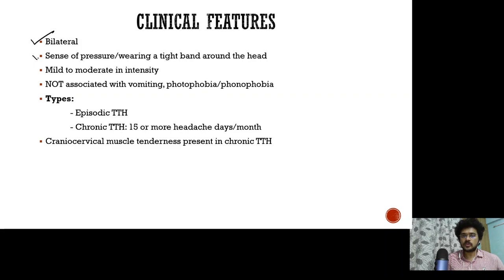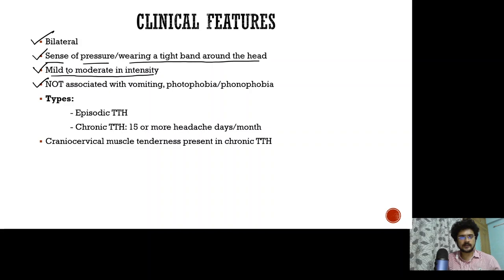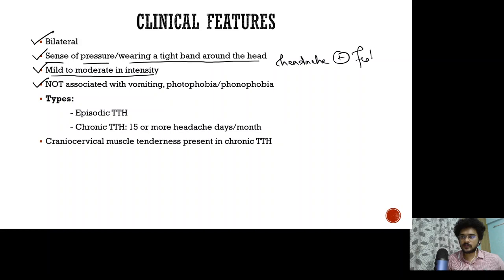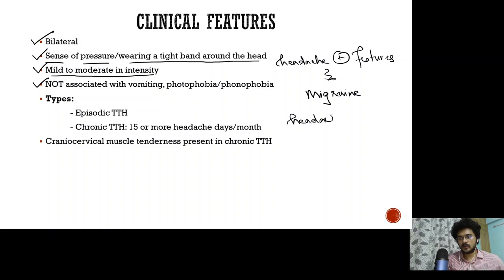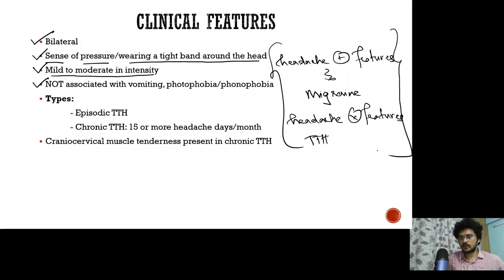Coming to the clinical features, tension type headache is bilateral, and the patient usually describes it as a sense of pressure or wearing a tight band around the head. The headache is mild to moderate in intensity and is usually featureless — no vomiting, nausea, photophobia, phonophobia, or aura. A simple way to differentiate: a headache with many associated features is migraine; without those features, it's tension type headache.